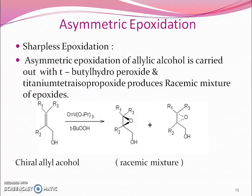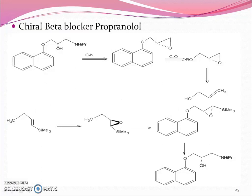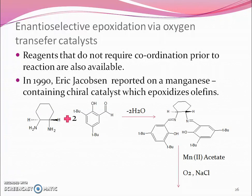The asymmetric epoxidation, also known as Sharpless epoxidation, is another example of chiral catalyst use. The chiral beta-blocker propranolol is synthesized by this method. Enantioselective epoxidation via oxygen transfer catalyst is also covered under this category.